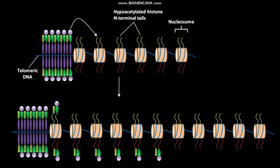The bound SIR2 protein then deacetylates neighboring histones. The SIR3, SIR4, and SIR2 proteins then bind to the hypoacetylated histone N-terminal tails as described previously. This process is then repeated.